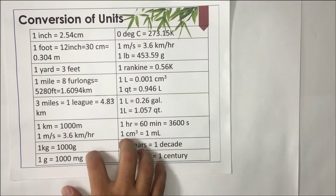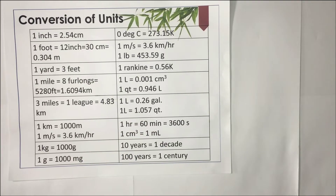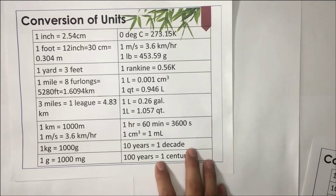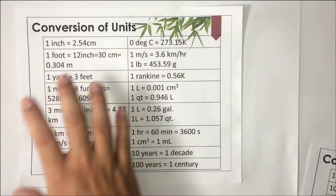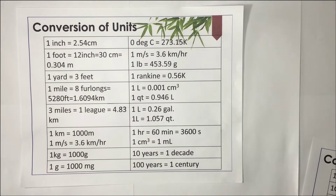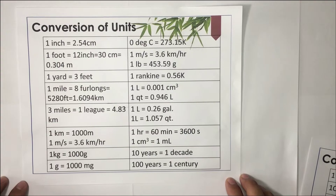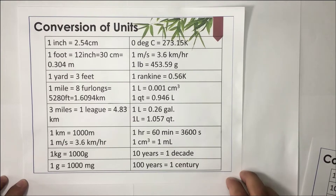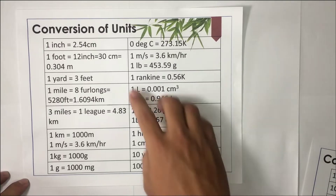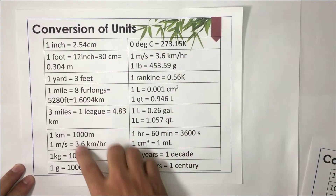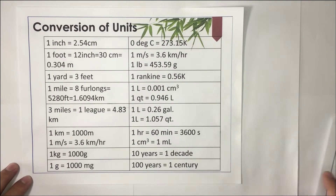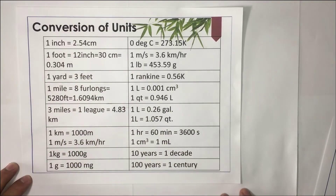In converting from one unit to another unit, we need conversion tables. We have table 1 and table 2. Let's focus first on table 1. The conversion table helps us to easily convert from one unit to another, whether it is an SI unit, English unit, or other system. I list the different units that are mostly used in physics.